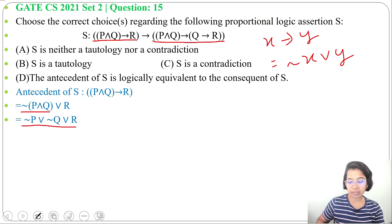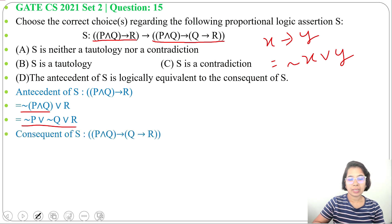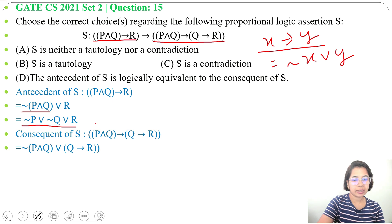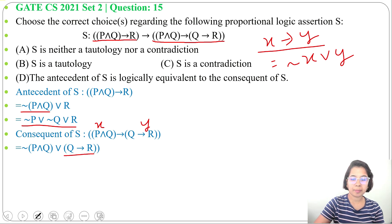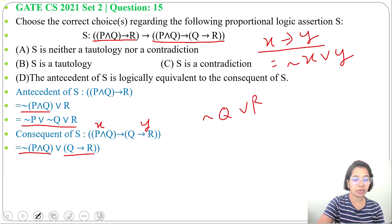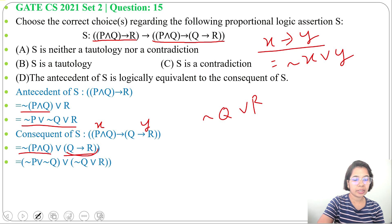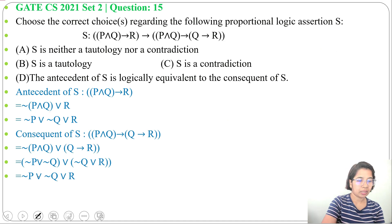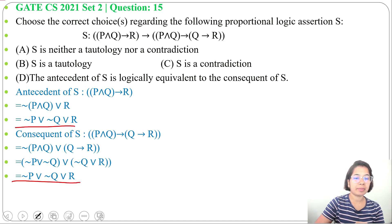Now let's simplify the consequent, P∧Q→(Q→R). Using X→Y ≡ ¬X∨Y, it becomes ¬(P∧Q)∨(Q→R). Here Q→R is ¬Q∨R, and on the left side we apply De Morgan's law to get ¬P∨¬Q. So the whole thing becomes ¬P∨¬Q∨R. These two are the same after simplification.